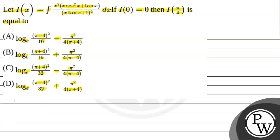Before solving the problem, we will talk about the key concept. If a function is in a product form, u times v dx, then we will use integration by parts. If this is the first function and this is the second function, then: u times integration of v dx, minus d/dx of u times integration of v dx, all integrated dx.